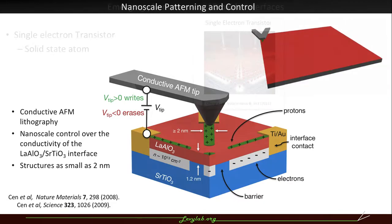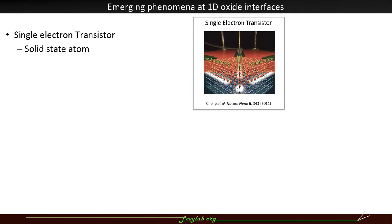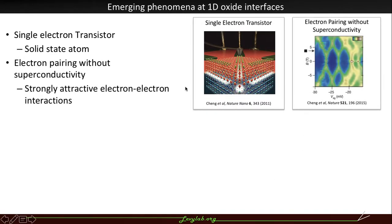Using this technique we can create a variety of devices such as a single electron transistor where we can use gates to control the number of electrons on a quantum dot. These devices have exhibited interesting quantum phases such as electron pairing without superconductivity indicating that we have strongly attractive electron-electron interactions.